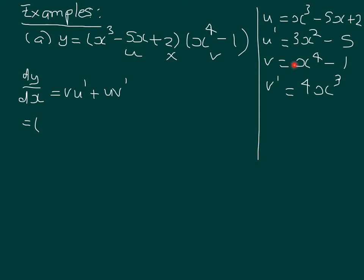So what we've got to do is have a look over here. It starts with v, so v is (x⁴ - 1) times u', which is (3x² - 5), plus u, which is (x³ - 5x + 2), times v', which is 4x³.